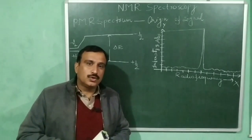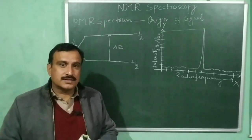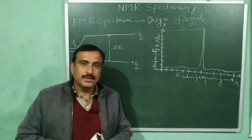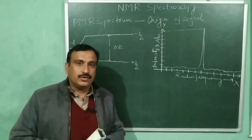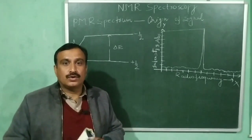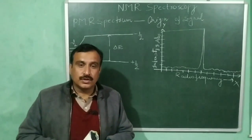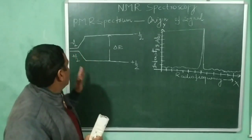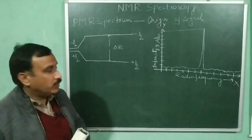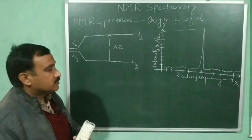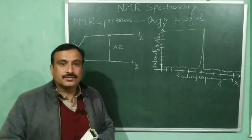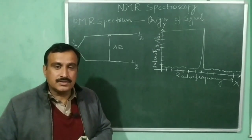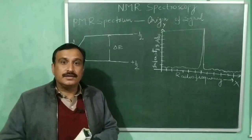In my previous video, we discussed the principle of NMR spectroscopy, where I told you that for a hydrogen nucleus or for a proton, two energy states or two nuclear spin states are possible — one is plus half and second is minus half. These two energy states have the same energy, that is, these are degenerate.